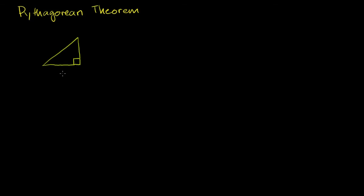If you've never seen a 90 degree angle before, the way to think about it is: if one side goes straight left to right and this side goes straight up and down, these sides are perpendicular, or the angle between them is 90 degrees — it is a right angle. And the Pythagorean Theorem tells us that if we're dealing with a right triangle — not a wrong triangle — if we're dealing with a right triangle, which is a triangle that has a right angle or a 90 degree angle in it.